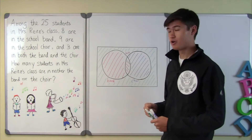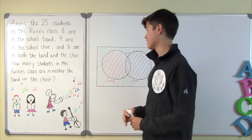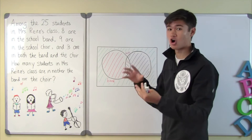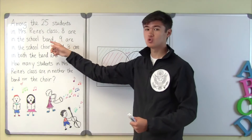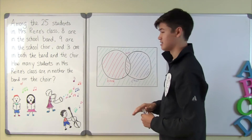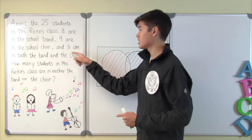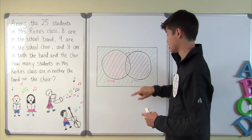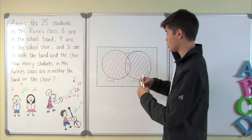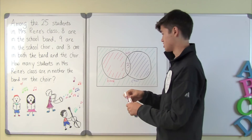Now let's use the diagram we've just drawn and the given information. The question tells us that there are 25 students in Mrs. Reitz's class — that's everything inside the rectangle: the green, red, purple, and blue sections combined. Eight are in the school band, which is this circle — the red section and the purple section. The question says 3 are in both band and choir, which is the purple section, so purple equals 3. Since the whole band circle is 8, the red section is 8 minus 3, which equals 5.